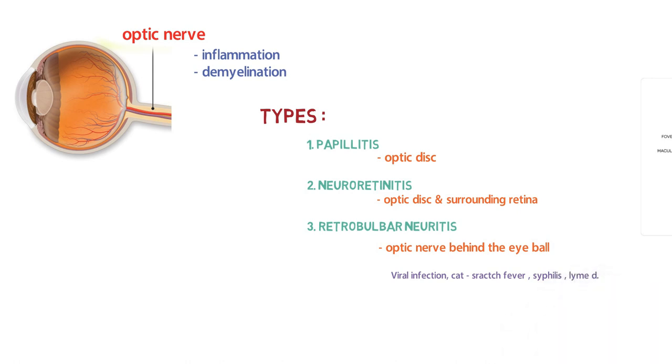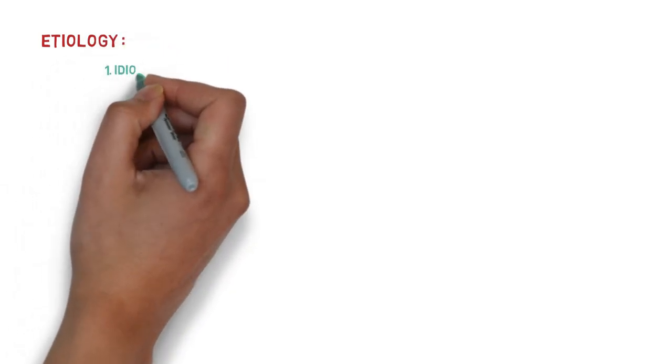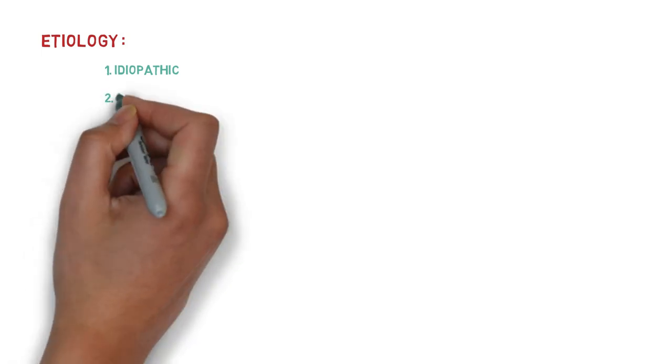We are going toward etiology of optic neuritis. Basically, optic neuritis is idiopathic. That is, in a large proportion of cases, the underlying cause is unidentifiable. That's why it is mainly idiopathic.